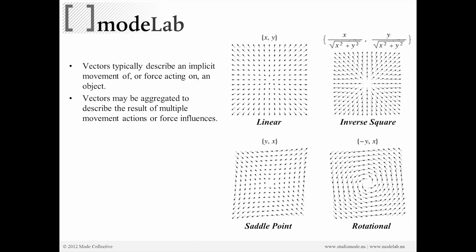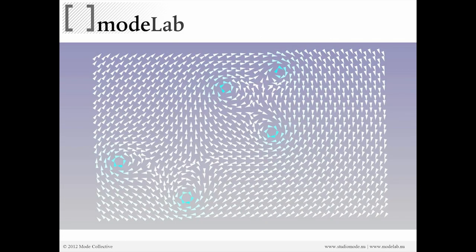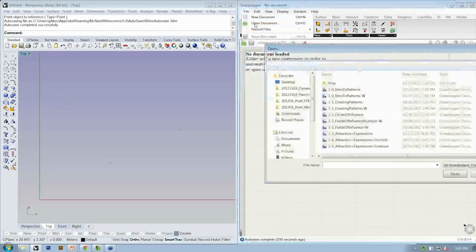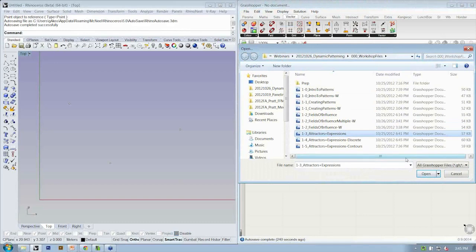Here you can see the kind of array of vectors — if you were to just draw a vector from each point to the attractor at the center, or if you were to start to do a little bit of math by dividing it by the square of its length, or modify the x and y parts of the vector to adjust how it shows change across the field. These are the things we're going to be doing in the next exercise. So let's go ahead and open up the next file: attractors plus expressions.